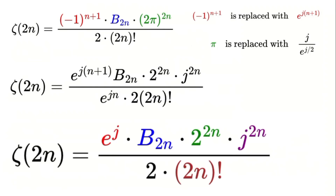Simplifying further, we can write zeta of 2n equals e to the power of j times the Bernoulli number b sub 2n, times 2 raised to the power of 2n, times j raised to the power of 2n, divided by 2n factorial. This is the virtual Euler-Zeta formula — the same as the original formula but expressed entirely in terms of virtual numbers.